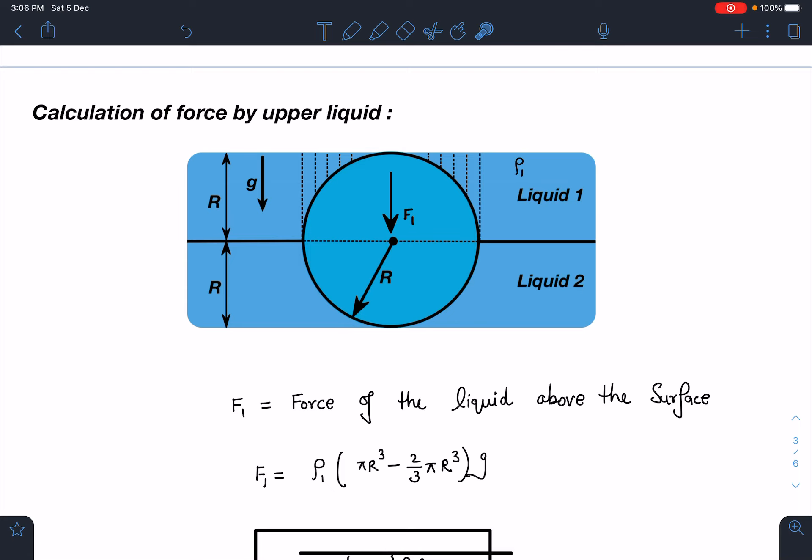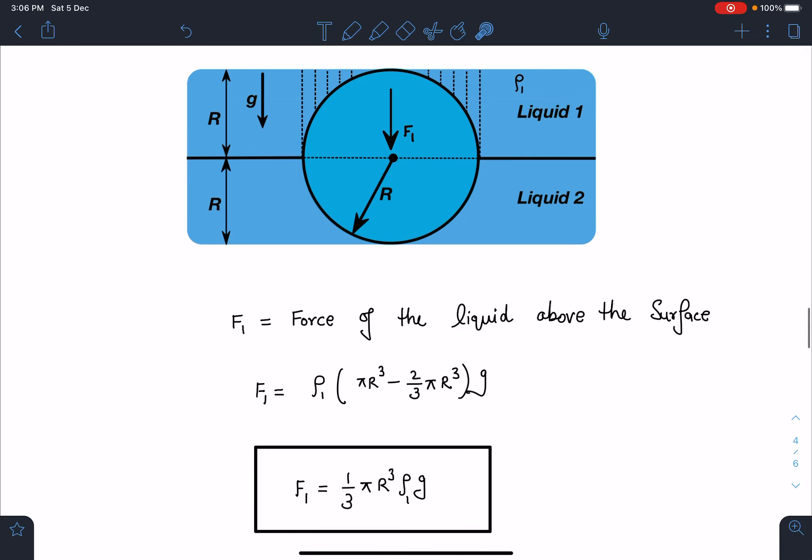F1 will be equal to rho 1 into pi r square H, H is also R, minus 2 by 3 pi r cube into G. So very easily I am getting the value of F1 which is 1 by 3 pi r cube rho 1 into G.